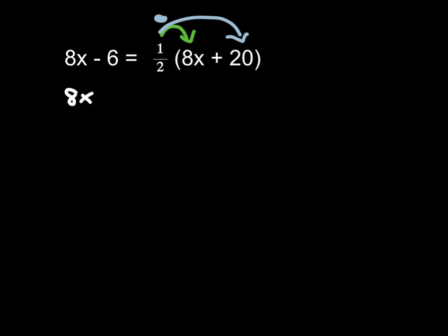We are going to multiply 1 half times the 8x, and multiply the 1 half times the 20. Leaving 8x minus 6 here. Half of 8x is 4x, because half of 8 is 4,